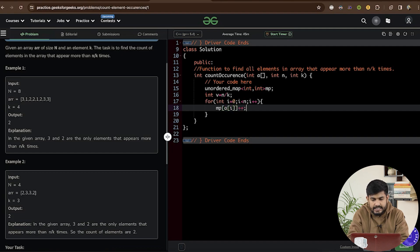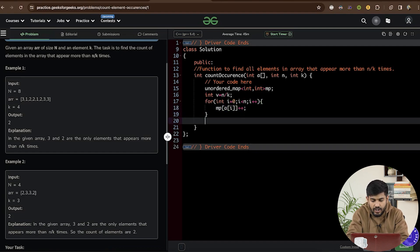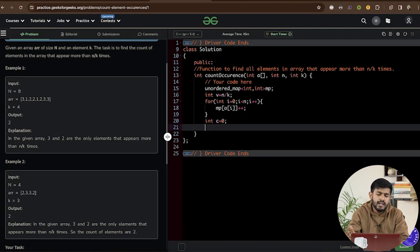And then we would be using something like m of a of i plus plus. So if the key does not exist, it would create. If the key already exists, it would just keep quiet and increment the value. And then we would be iterating by using a for each loop in the map itself.